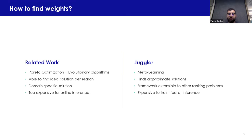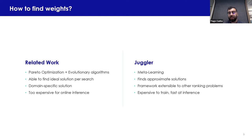Looking at related work, we found that most approaches use predict-and-optimize and evolutionary algorithms, which can find ideal solutions for a search, although they usually define domain-specific solutions. The biggest disadvantage for us is that they are too expensive to use in online inference. To address that, we proposed Juggler, which uses meta-learning. Although we find approximate solutions, we look at past interactions customers had with the system and try to find which is the best solution based on these patterns. This framework is extensible to other ranking problems.